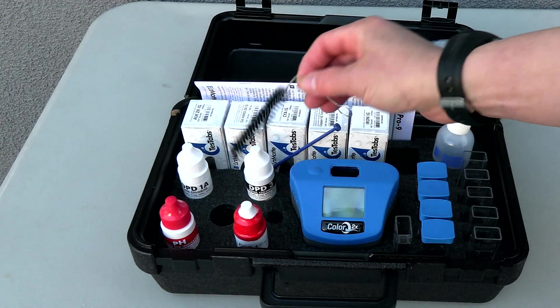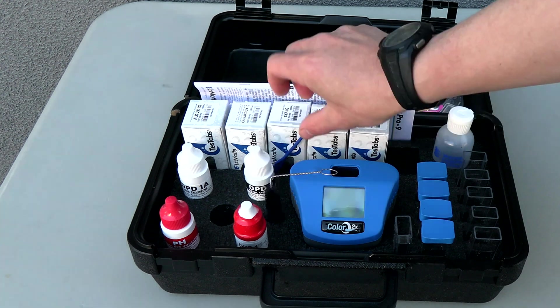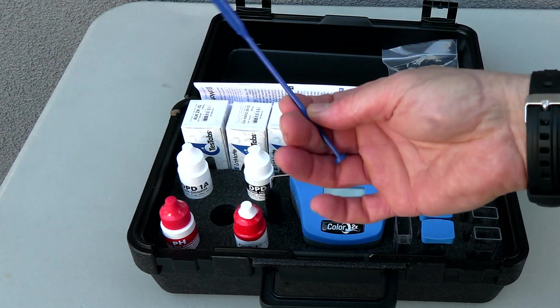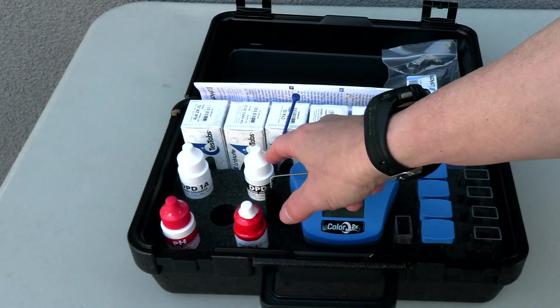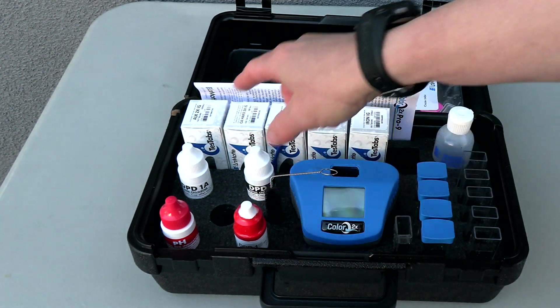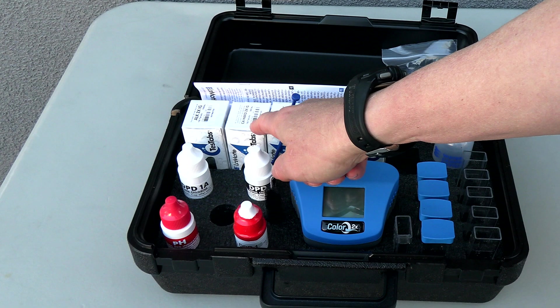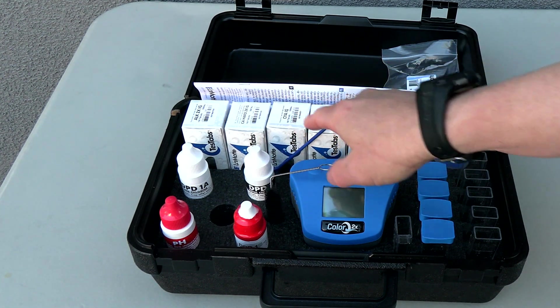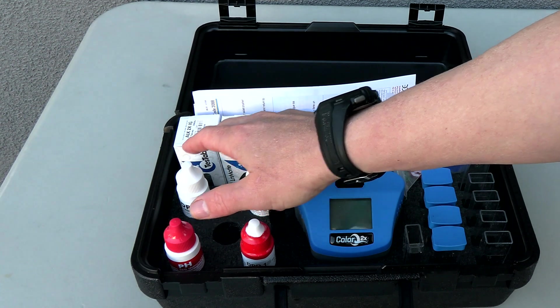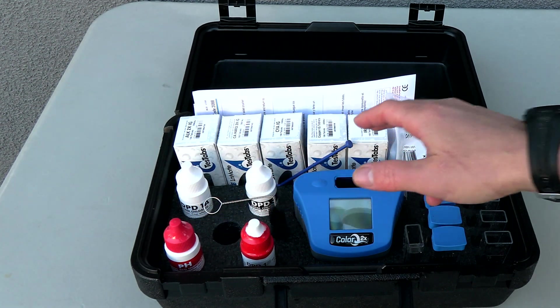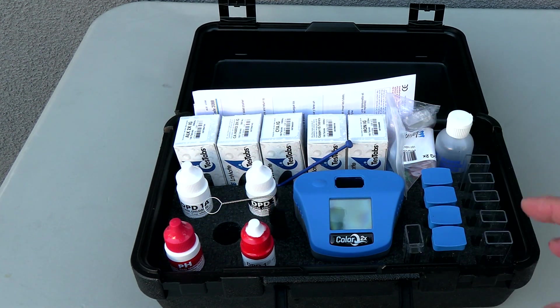You have the photometer itself, a cleaning tool for the test tubes, and a tablet crusher and stirring tool. You have the phenol red for pH and for free and total chlorine. Then you have your alkalinity, calcium hardness, cyanuric acid, copper, and iron tablets. I should also note that there are 100 tablets included here for each of these test factors. LaMotte definitely went all out with this test kit.